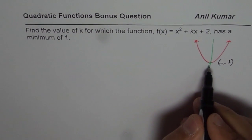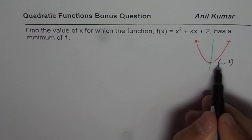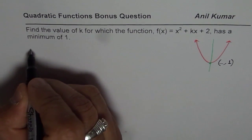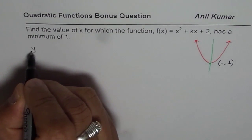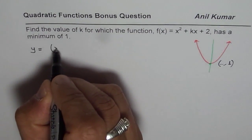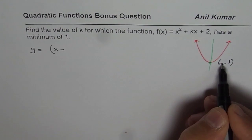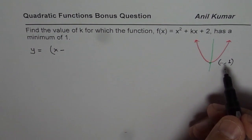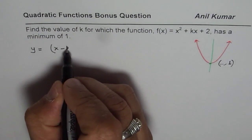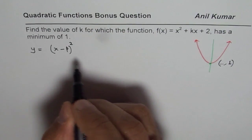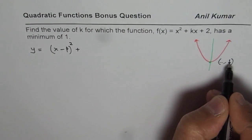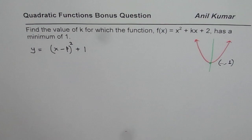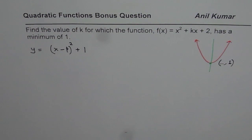But in any case, if you have a parabola with this kind of situation, then you can write equation of this parabola as y equals x minus - we don't know what this point is. So let me write this point as p. So x minus p whole square, plus 1, since 1 is the minimum value. So like this, we can write down our expression.